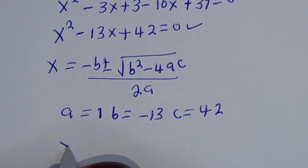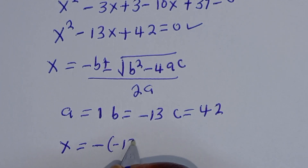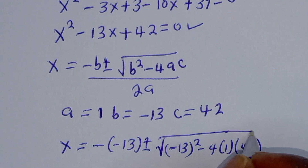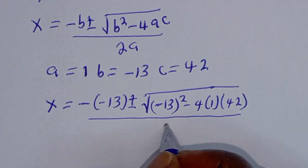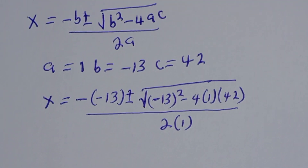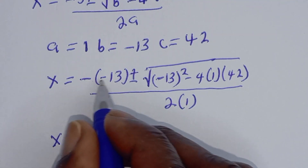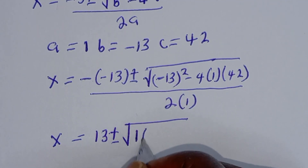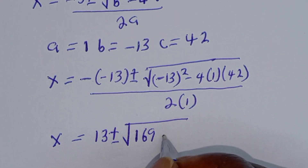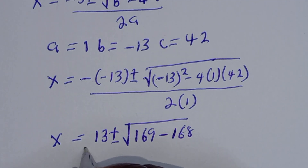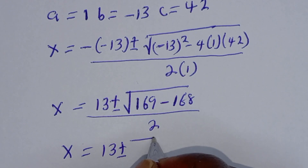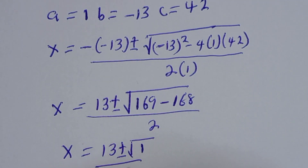Now we have S is equal to minus bracket minus 13, plus or minus square root of minus 13 squared minus 4 multiplied by 1 multiplied by 42. That gives us S is equal to 13 plus or minus square root of 169 minus 168, which is 1, all over 2.